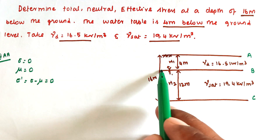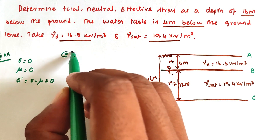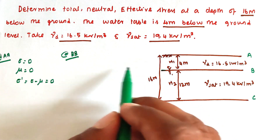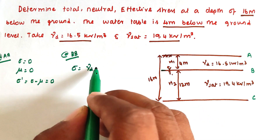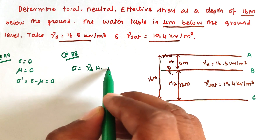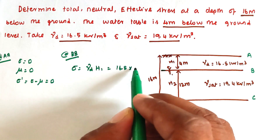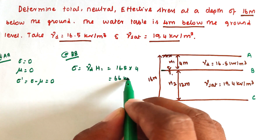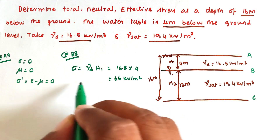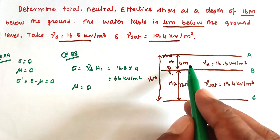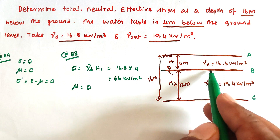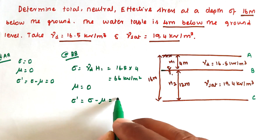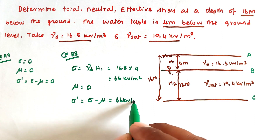At point B (the water table, 4 m depth): total stress σ = γd × h1 = 16.5 × 4 = 66 kN/m². The pore pressure u = 0 because there is no water above the B layer. Therefore, effective stress σ' = σ − u = 66 kN/m².